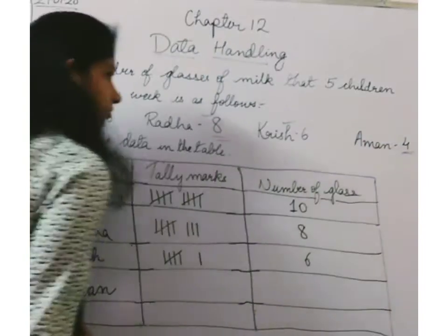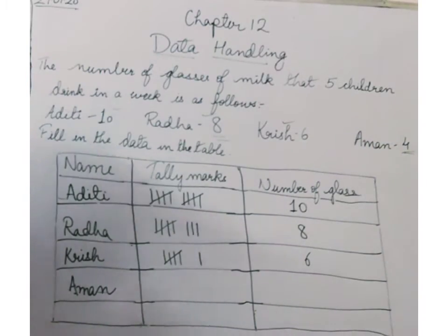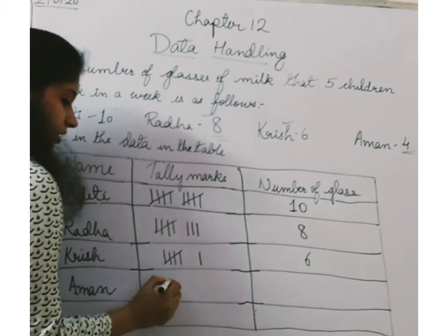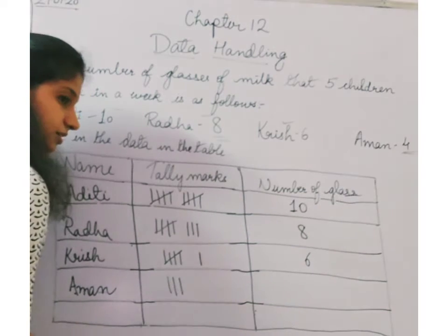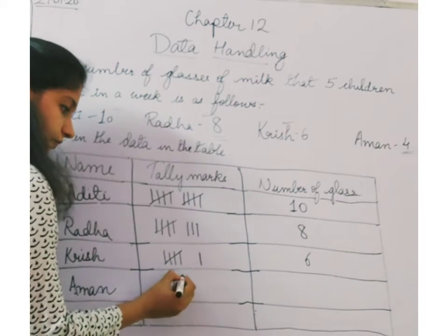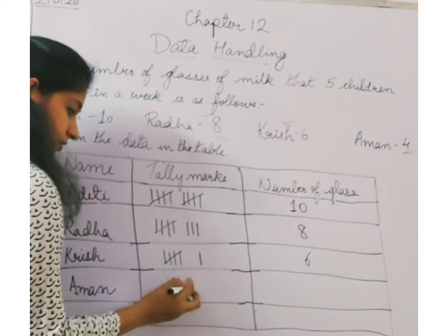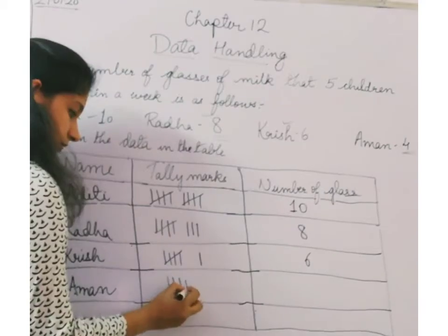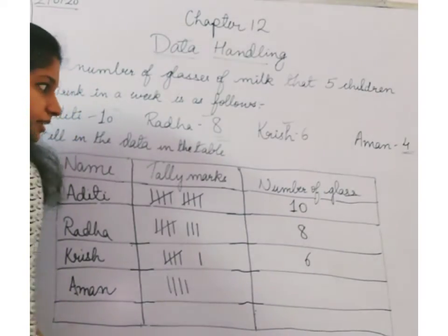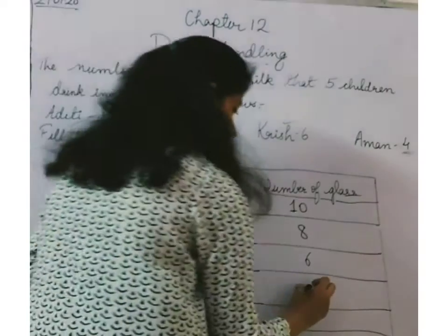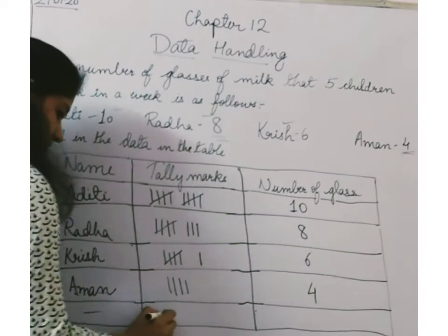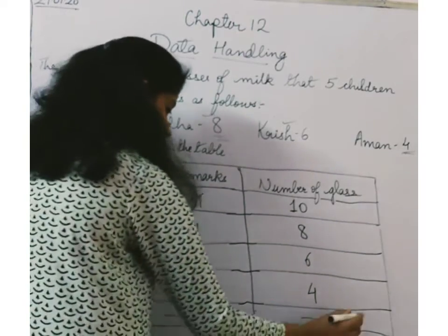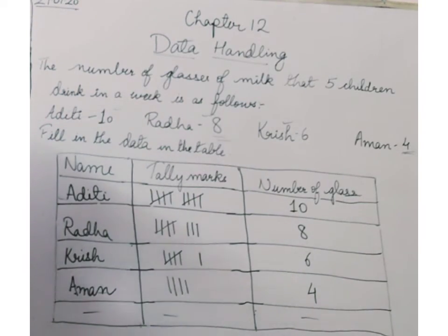Next is Amal. Amal brings how many? Four. So for four, how will we represent? One, two, three, four. So we have filled in the table with the tally marks.